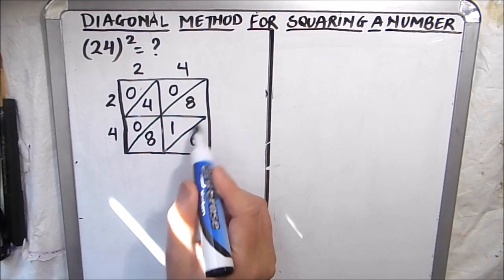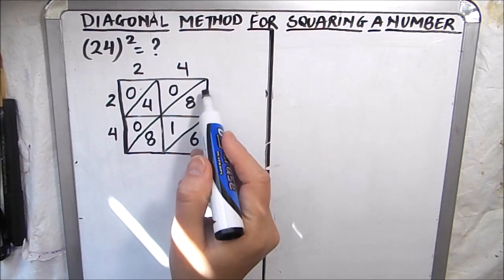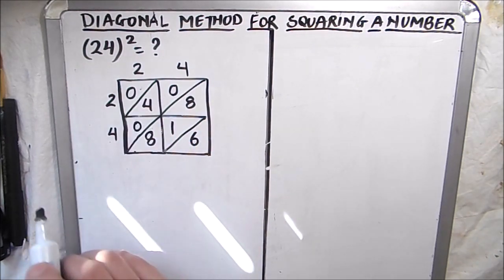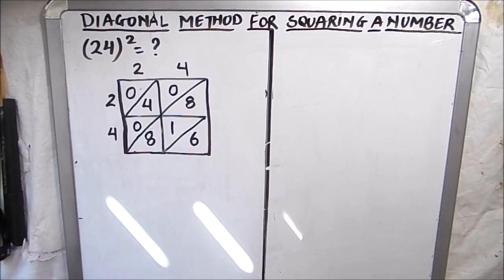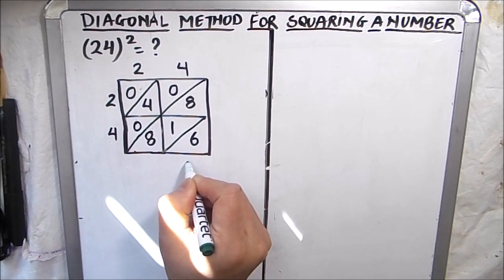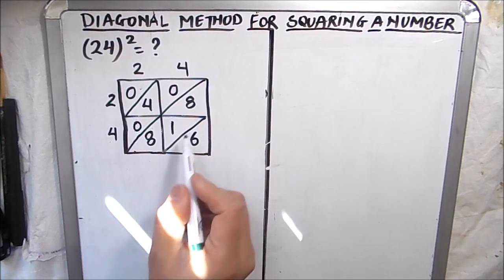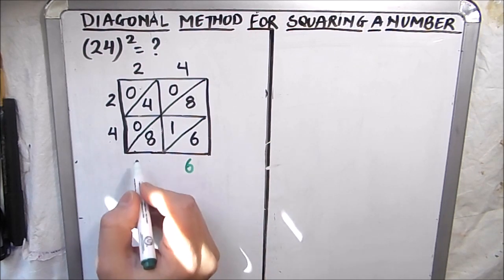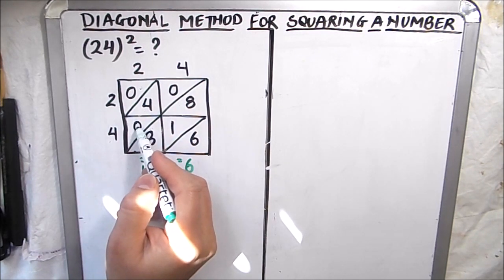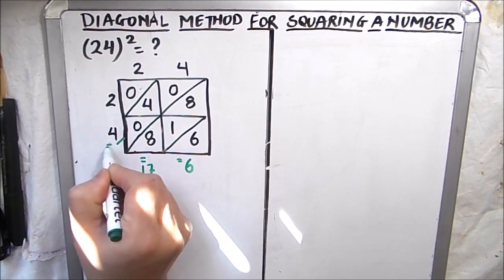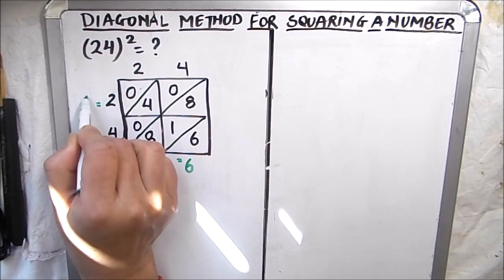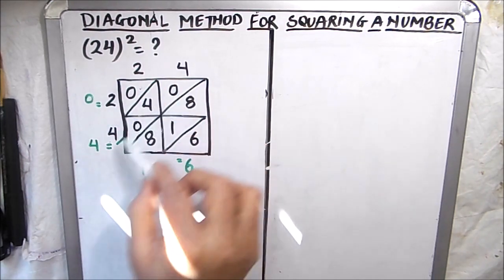We add the diagonals one by one. The first diagonal has one number, the second is between two diagonals where we add three numbers, then the next three numbers, and finally the last number. The first diagonal sum is 6, so we write 6. The next is 8 plus 1 plus 8, which gives 17. The next is 0 plus 4 plus 4, which gives 4. The last is 0.